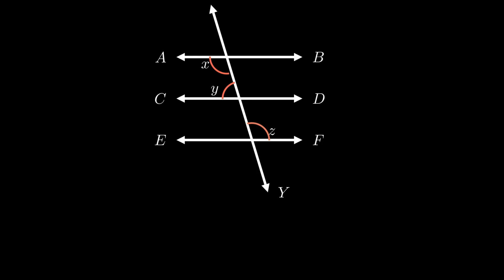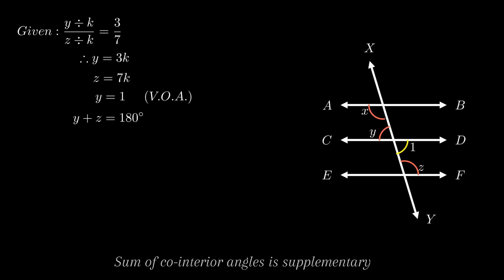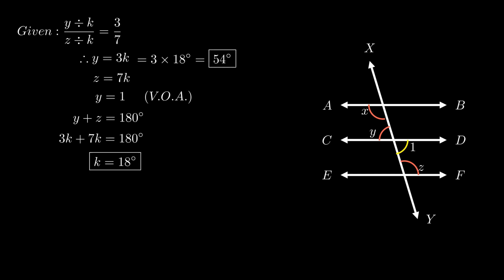To establish the relationship between angle Y and angle Z, we consider angle 1. From the figure, angle Y equals angle 1 as they are vertically opposite angles. The sum of angle 1 and angle Z equals 180 degrees as the sum of co-interior angles is supplementary. Putting in values: 3K plus 7K equals 180 degrees, giving 10K equals 180, so K equals 18. Therefore Y equals 3 × 18 = 54 degrees and Z equals 7 × 18 = 126 degrees.